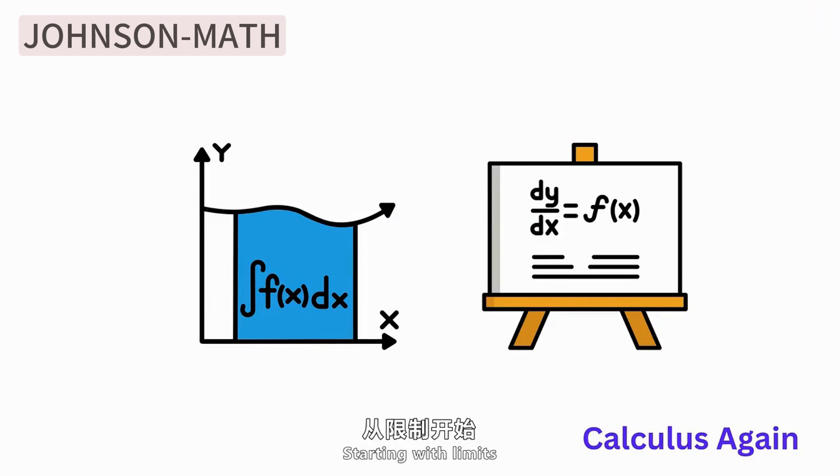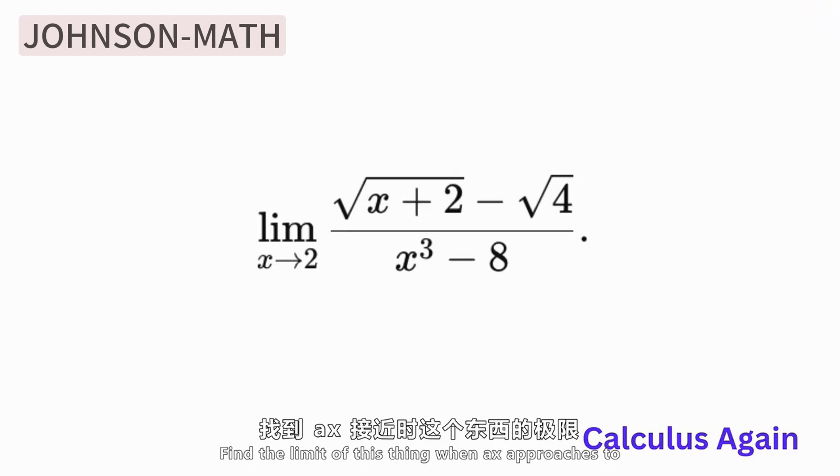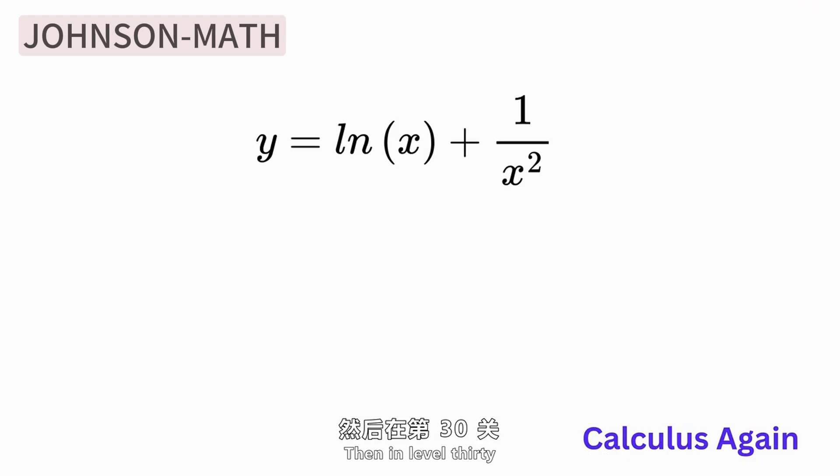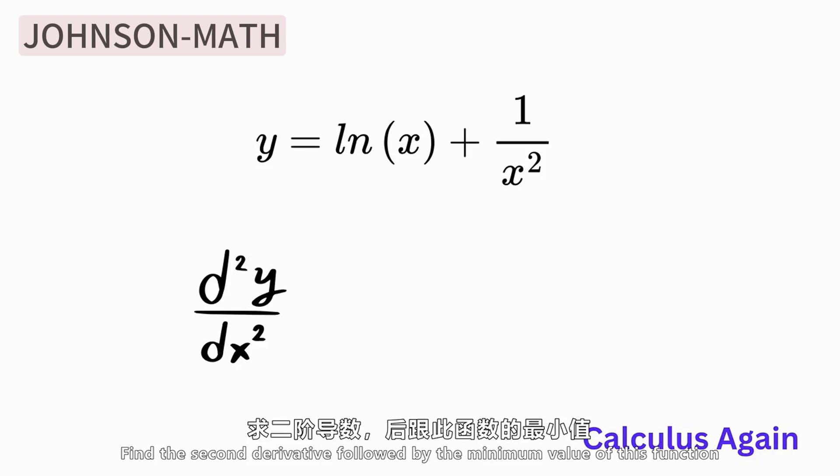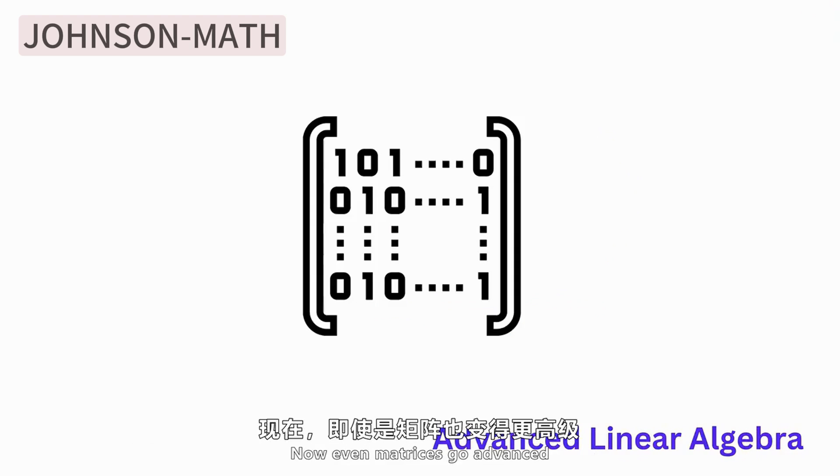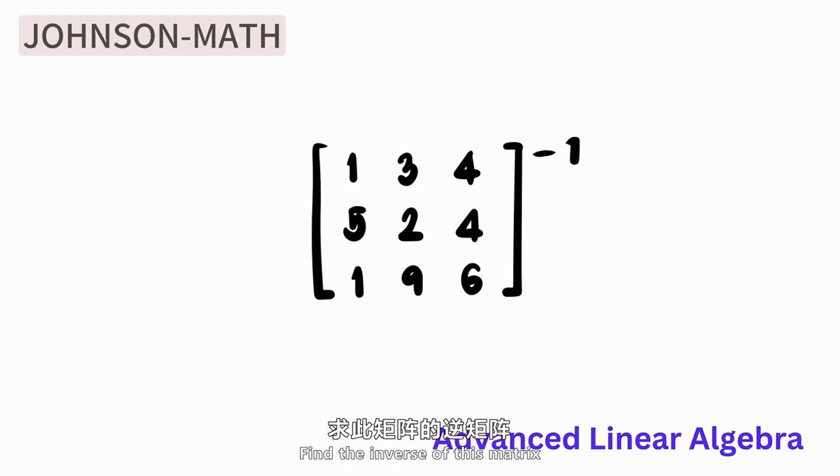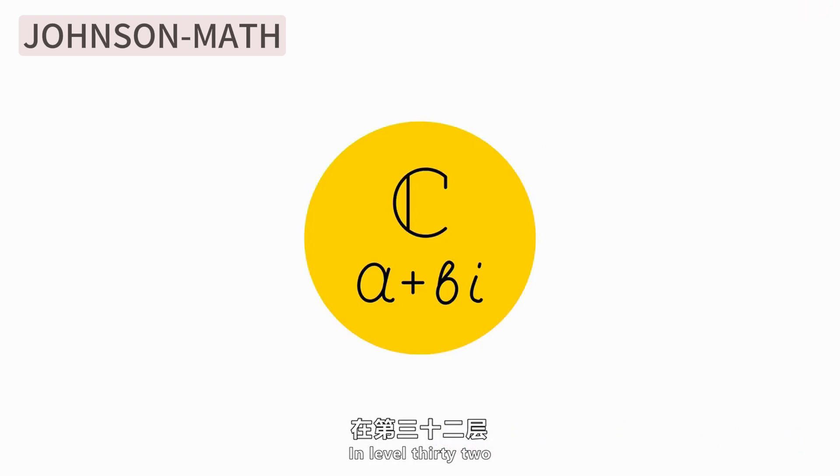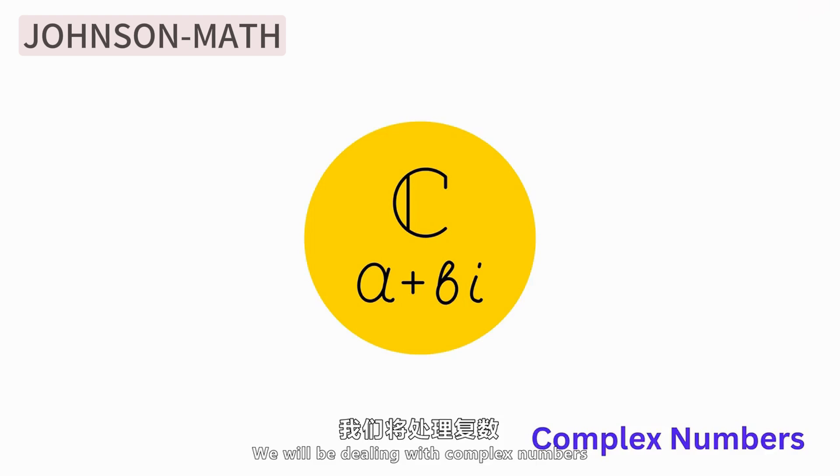In Level 30, find the second derivative, then find the minimum of this function. Now the content of matrices is also starting to get deeper. Find the inverse of this matrix. In Level 32, we'll start to deal with complex numbers. Find all complex numbers that satisfy this equation. Solve x to the power of 4 plus 16 equals 0 and express the solution in polar coordinate form.